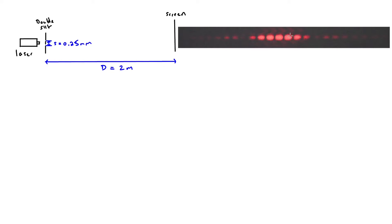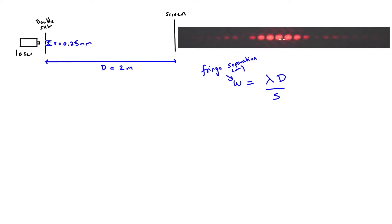At the first minimum, light from one slit has travelled half a wavelength further, causing destructive interference. The wavelength of visible light is very small - for red light around 700 nm - so you cannot directly measure the path difference. However, provided the slit separation S is much smaller than the slit-to-screen distance D, we can use Young's formula: W = λD/S, where W is the fringe separation in metres, S is the slit separation in metres, D is the slit-to-screen distance, and λ is the wavelength in metres.